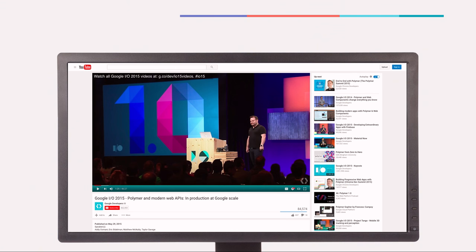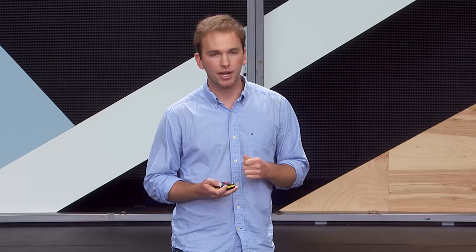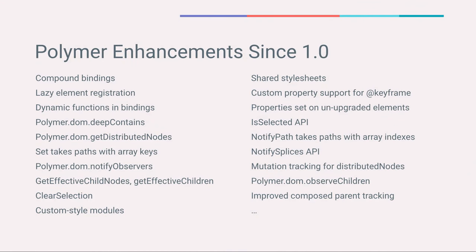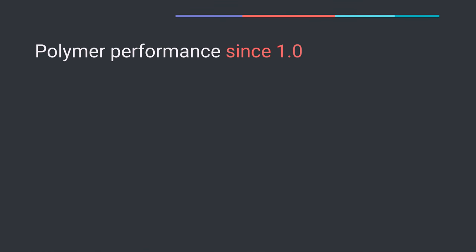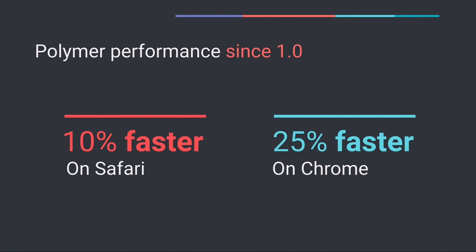With 1.0, we wanted to show the web component promise was not just theoretical, but that you could actually use web components in production today. Since this 1.0 launch, the library has seen many new features and enhancements, and it's gotten even faster. The latest version of Polymer is now another 10% faster on Safari and another 25% faster on Chrome for element construction.